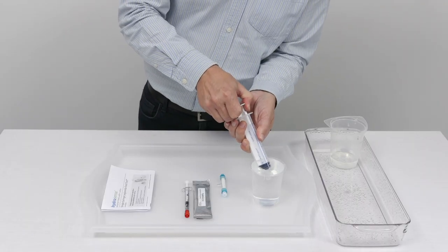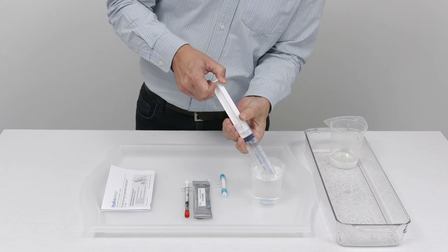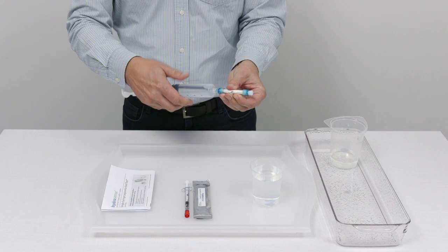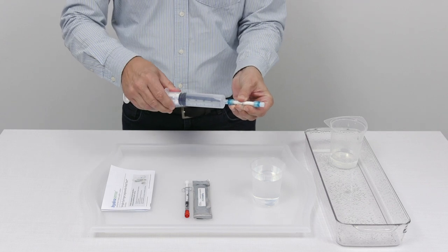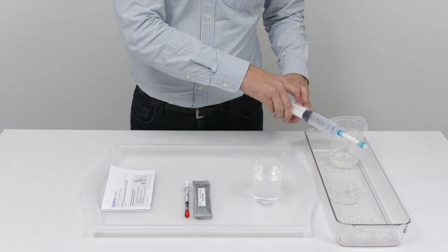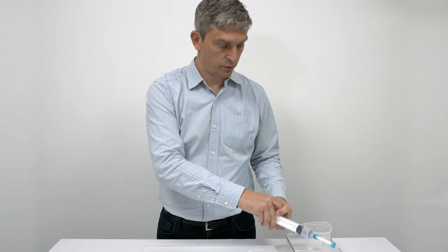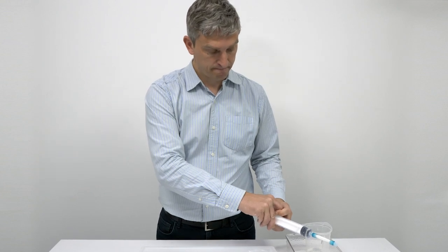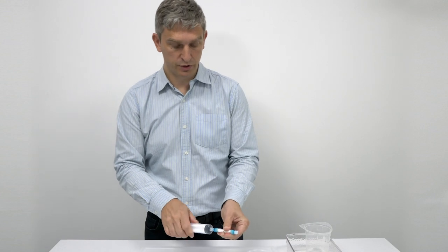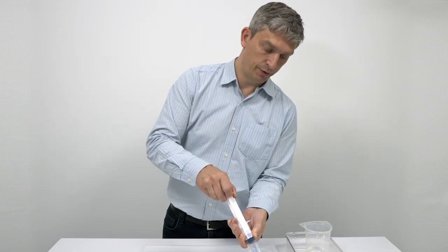So we take up the first syringe full, draw up to the 50 ml mark and then we attach it to the syringe and then we squeeze the liquid through. Now it should pass through quite easily but you may find that with turbid solutions it might take a little bit more pressure to pass the liquid through the filter.